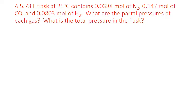Let's look at an application of this law. A 5.73-liter flask at 25 degrees Celsius contains 0.0388 moles of nitrogen gas, 0.147 moles of carbon monoxide gas, and 0.0803 moles of hydrogen gas. What are the partial pressures of each gas, and what is the total pressure in the flask? Let's start by calculating the partial pressures of each gas using the ideal gas law. We rearrange it by dividing each side by volume, giving us pressure equals moles times the ideal gas constant times temperature divided by volume.